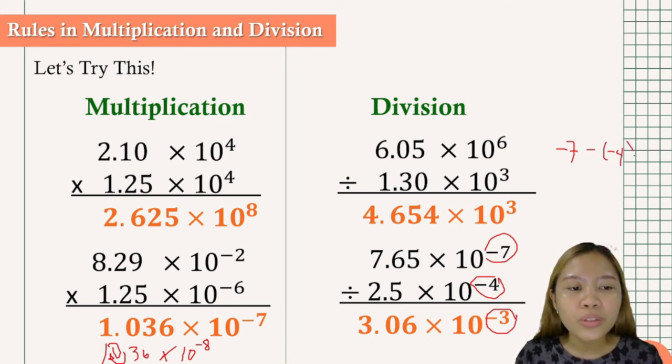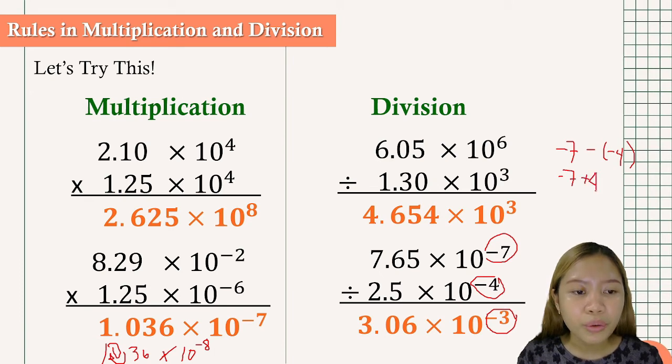So in the rules of integers, we have negative times negative, this will become positive. So we have negative 7 plus 4, and that is equal to negative 3. So that is why our exponent there is negative 3.